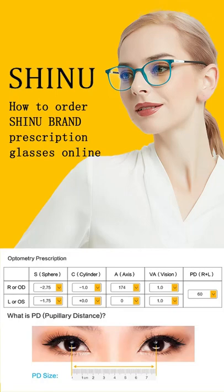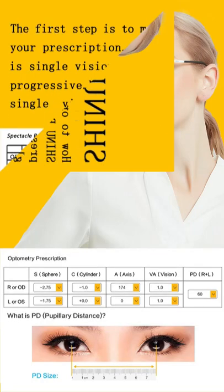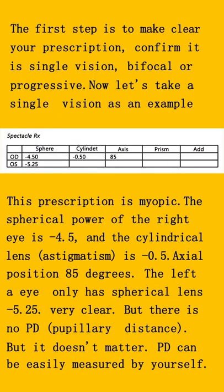How to order Schnu Brand prescription glasses online. The first step is to make clear your prescription. Confirm it is single vision, bifocal, or progressive. Now let's take a single vision as an example.